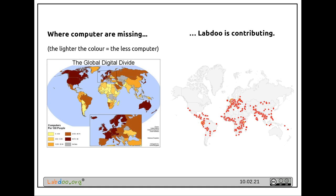When you see this world map, countries with light colors are not using many computers for education. And if you look at our map showing the location of Lab2 projects, you will see that many of those projects are especially in those countries most in need.